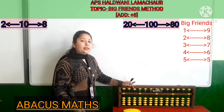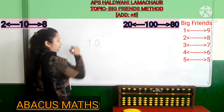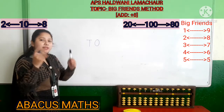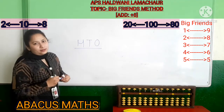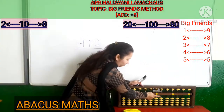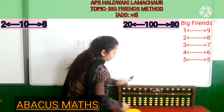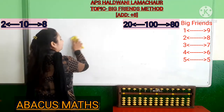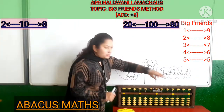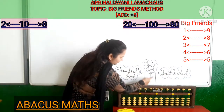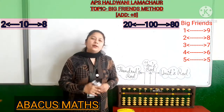We do our calculation in 3 rods. In small friends we were using the 1s rod and 10s rod. But in big friends — because the name denotes big — we are also using the 100s rod. So we use the 1s rod, 10s rod, and 100s rod. The 1s rod is called the units rod.